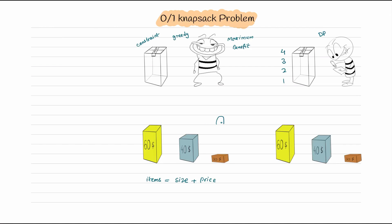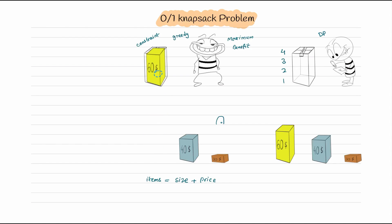The greedy thief enters the building, finds these three items, and picks the one with the maximum price — his motto is to get maximum benefit. So he picks the item with the maximum price, which is sixty dollars, and puts it in his bag. After that, there is no space left for any other item, so he leaves the building.